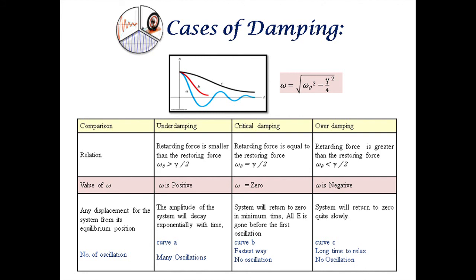In critical damping, where the retarding force is equal to the restoring force, the value of omega is zero. The system will return to zero in minimum time and there will be no oscillations.